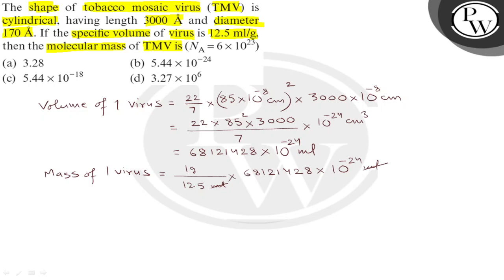This gives the exact value: 1 into 6.81428 divided by 12.5, into 10 raise to minus 24 grams.